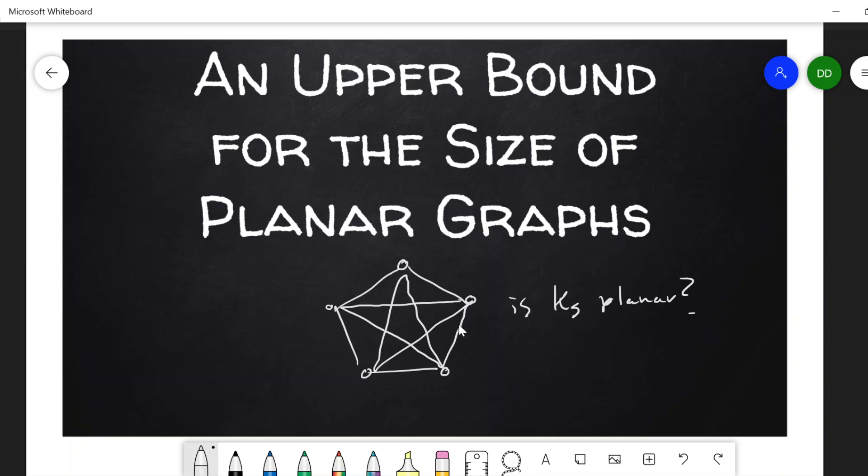There's lots of different ways we could redraw this graph, and we'd have to check all of them or come up with some kind of argument involving the positioning of the vertices to prove that this is planar or not planar.